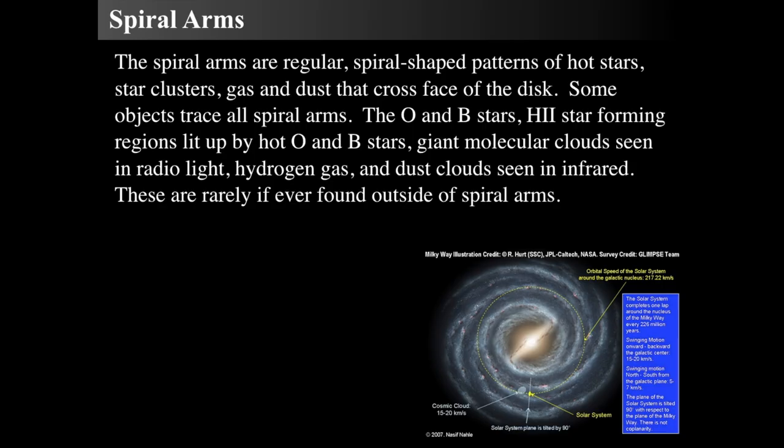So what are spiral arms? Spiral arms are these spiral-shaped patterns dotted with hot stars, type O and B type stars, young star clusters, and gas and dust. The O and B type stars form in these regions, in the spiral arms, and light them up.